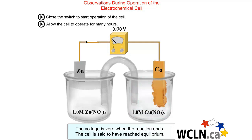That causes the blue color in the solution to fade out and causes the mass of the copper electrode to increase. As these chemical changes occur, the molarity of all ions drops below 1 molar and the voltage begins to drop as the concentration decreases.